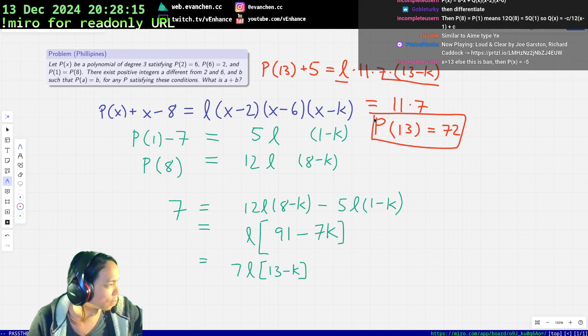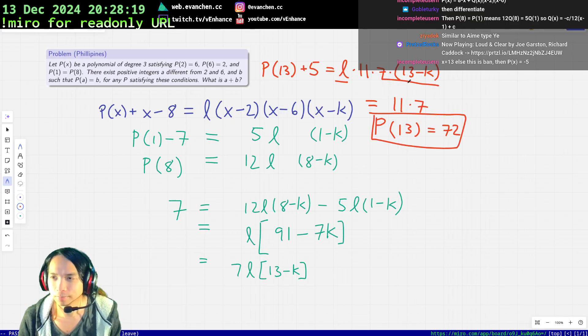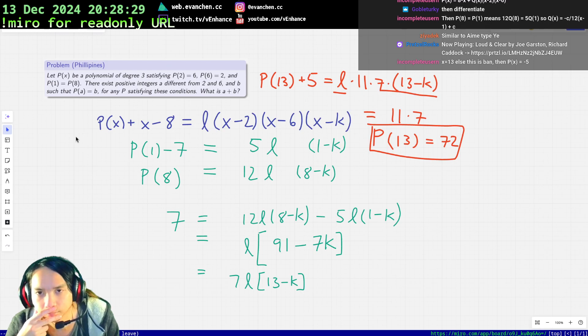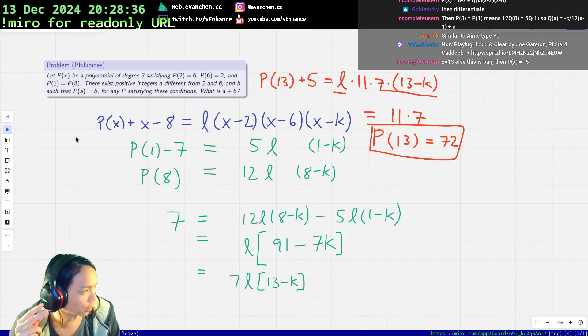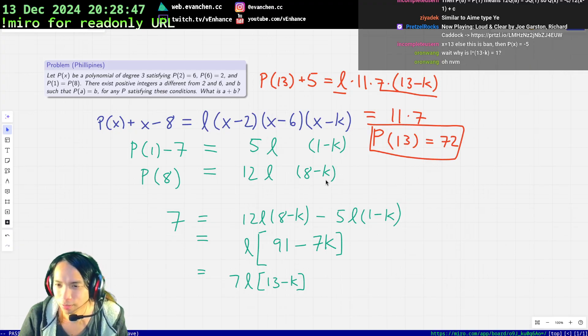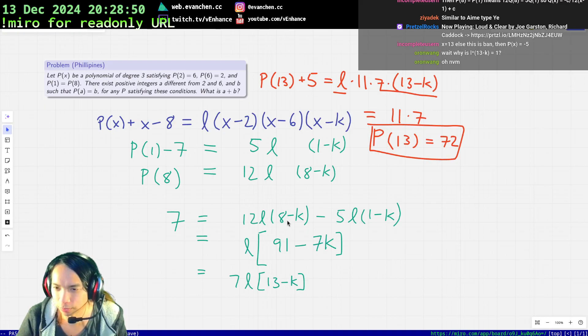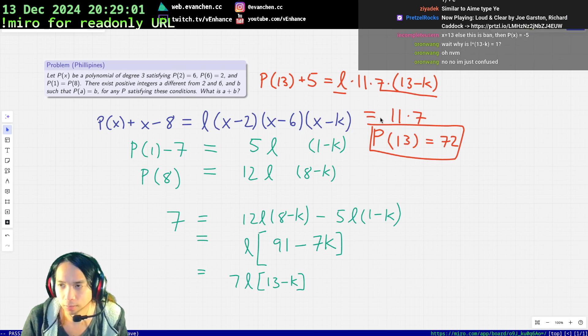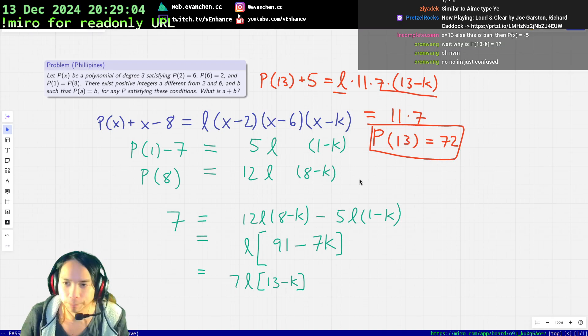I think that's all. Should be, I hope this is correct. Why is l times (13 - k) equal to... Did I screw up the subtraction? So I subtract here, this is 96 minus 5, this is minus 12 plus 5 minus 7k. I think this is fine, right? 7 times (13 - k). Okay cool, great.